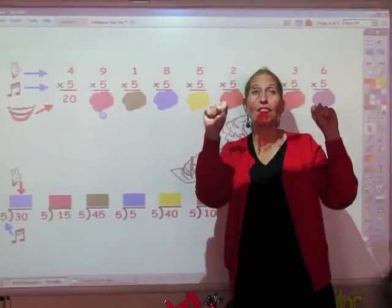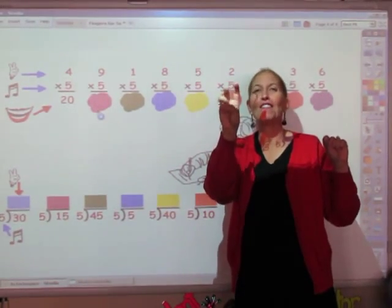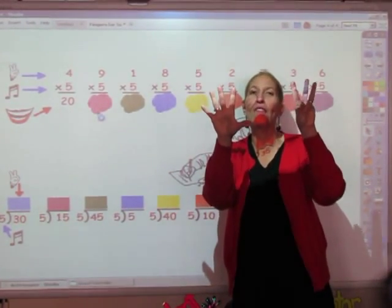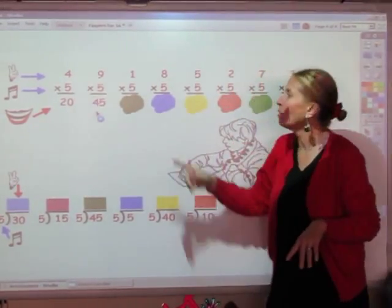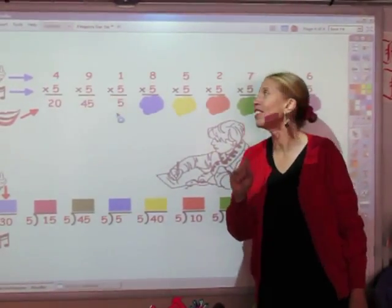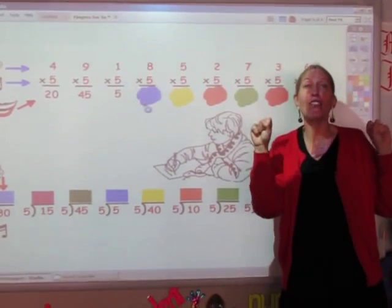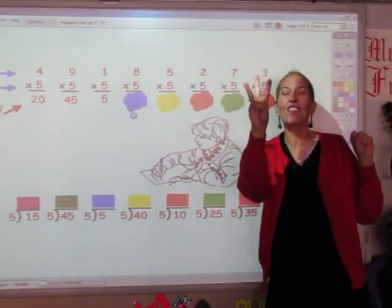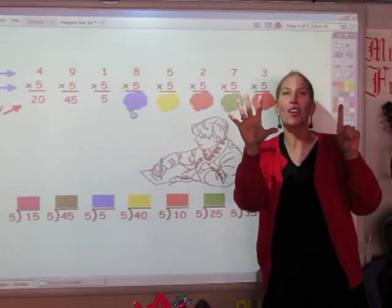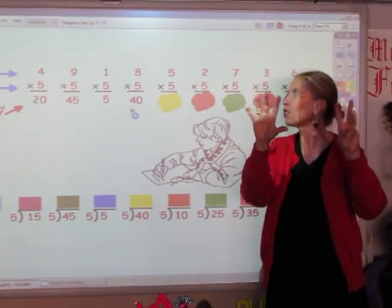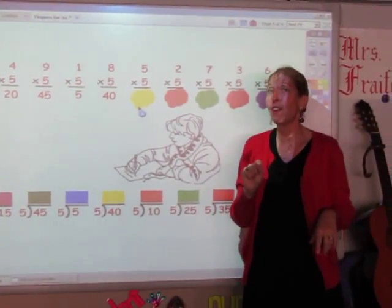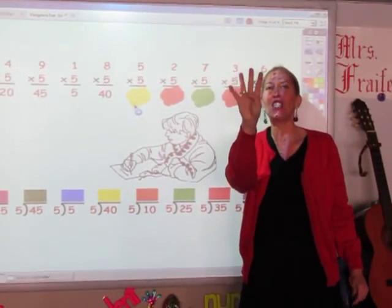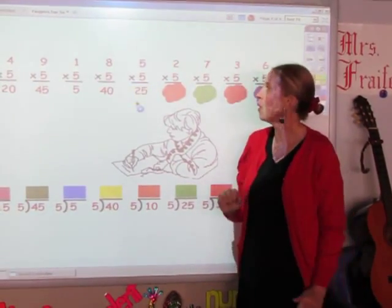I'm going to say the fives for nine fingers: 5, 10, 15, 20, 25, 30, 35, 40, 45. I'm going to say it for one finger: 5. That's the answer. I'm going to say the fives for eight fingers: 5, 10, 15, 20, 25, 30, 35, 40. The answer is 40. I'm going to say the fives for five fingers: 5, 10, 15, 20, 25. The answer is 25.